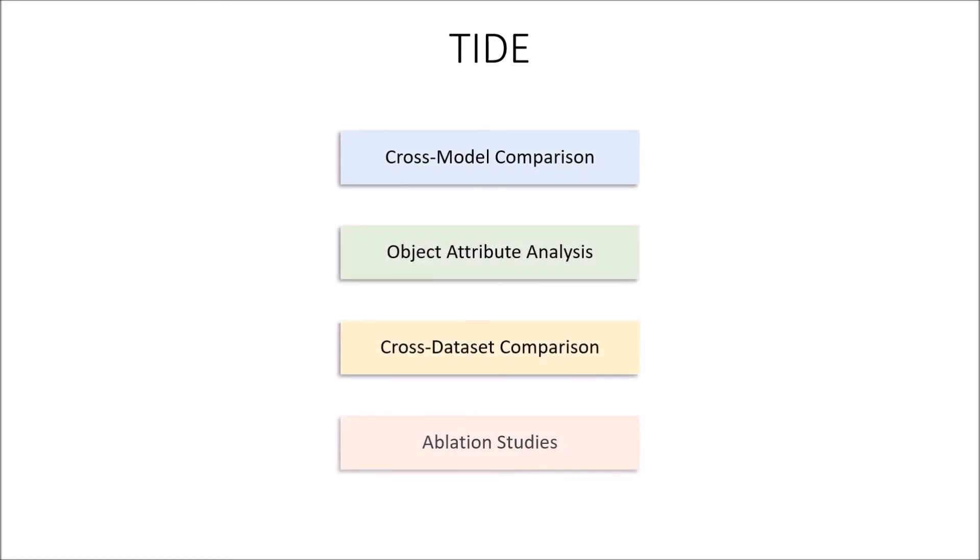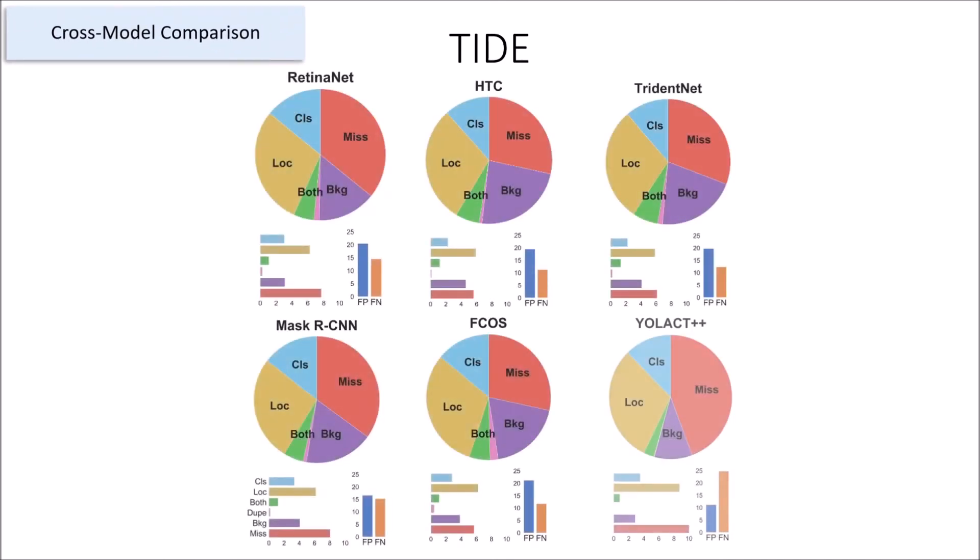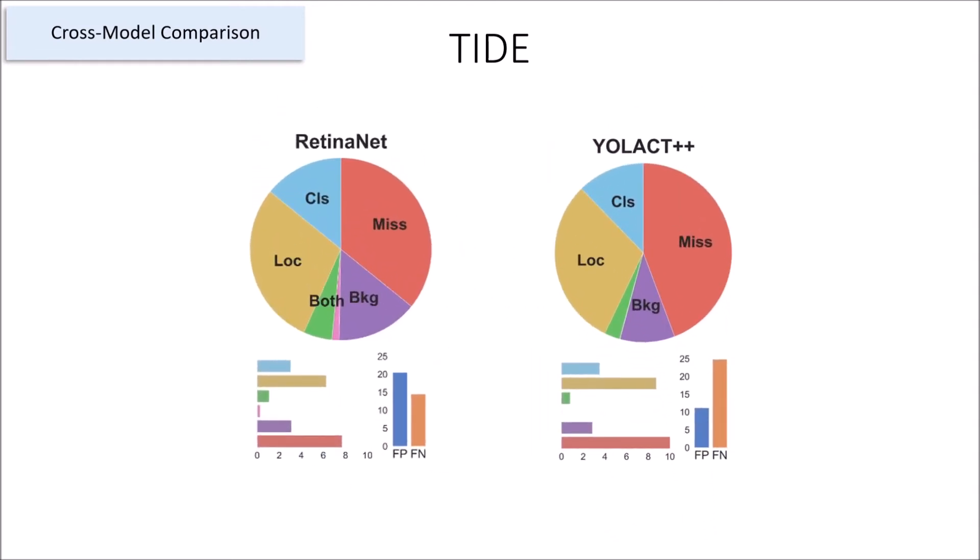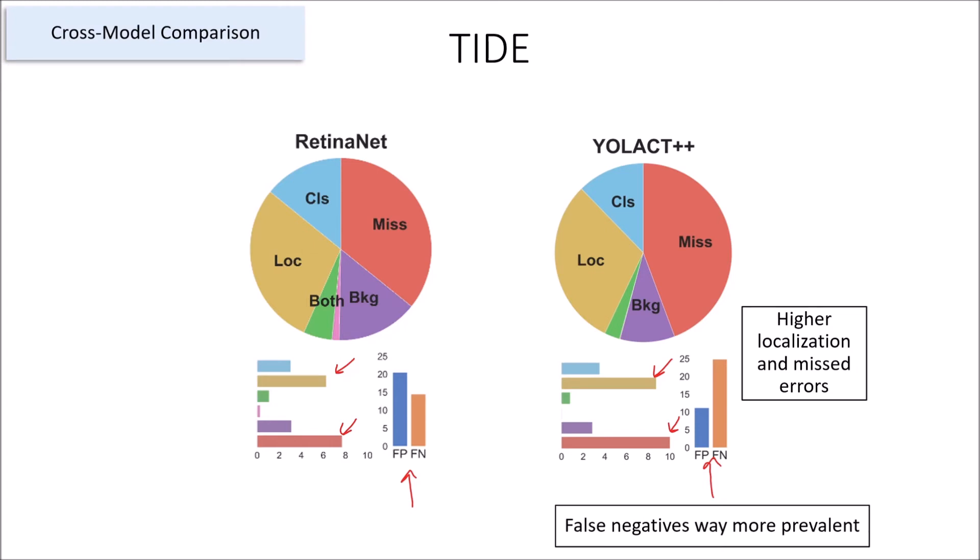With this in mind, let's take a look at how TIDE can be used for analysis in several different contexts. First, we can directly compare the summaries of two or more models. This can assist in choosing the best model for a given task, but it also allows us to more clearly understand how the design choices made by the authors affect their models. For instance, Yolact++ is a real-time instance segmenter that builds off of a cut-down version of Retinet. If we compare the object detection branch of Yolact++ to that of Retinet, we can get an idea of how the author's changes affected the model. And we can immediately see from this comparison that the changes Yolact made to speed up the model mostly hurts their localization and misdetection performance, and also significantly changes the balance of false positives and false negatives.